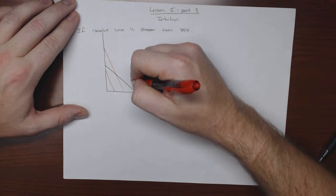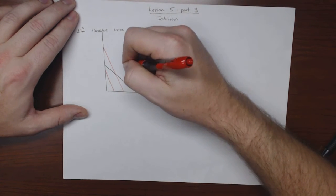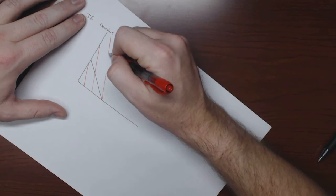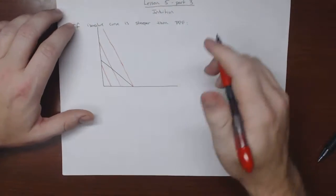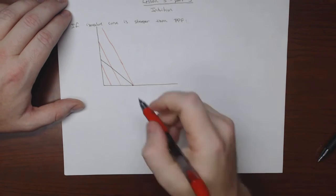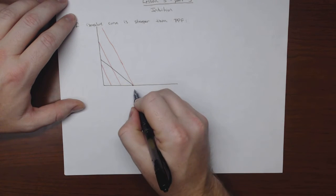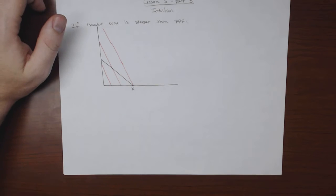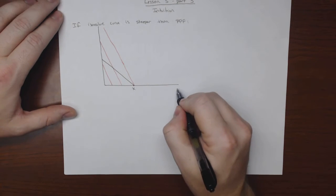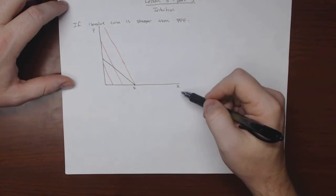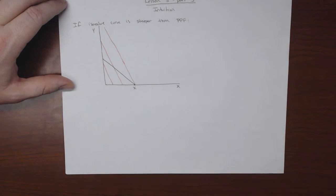We would maximize value, I'm going to have to rotate this so I can draw it more quickly. Our iso value line is steeper than our PPF, well here we maximize value by producing all x. This would be x and y. If we produce all x, we maximize our value.